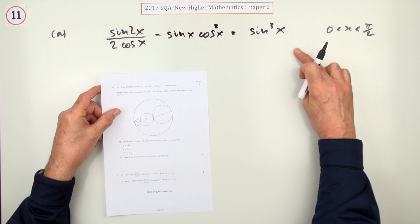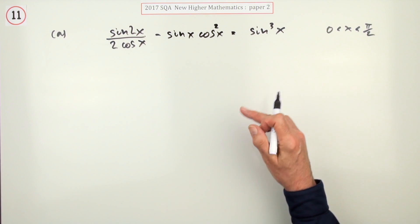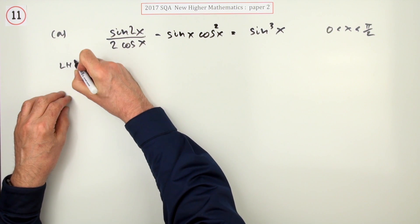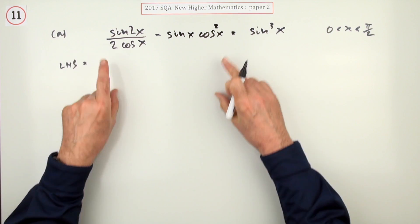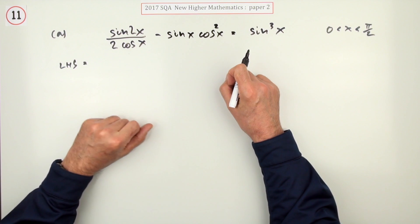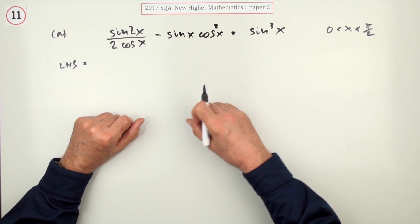Show that this identity is correct. Well, the standard technique for demonstrating an identity is to take the more cumbersome side, the one with the most bits in it, and try and turn it into the other one.